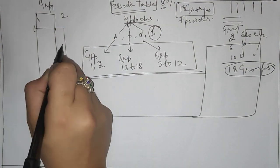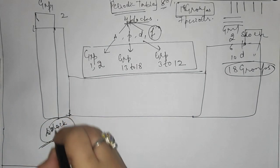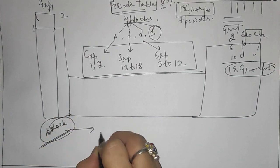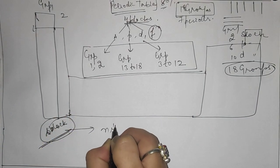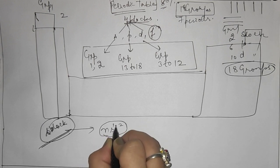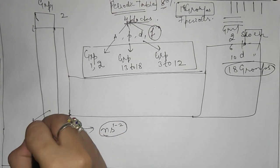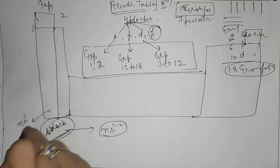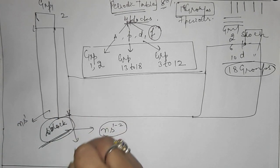The general electronic configuration of the s-block is ns¹⁻². This means group 1 has the general configuration ns¹ and group 2 has the general configuration ns².